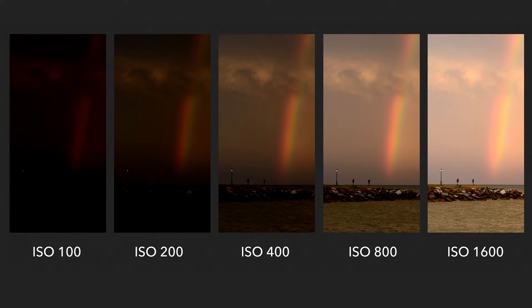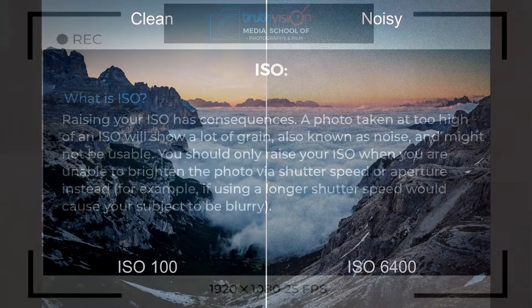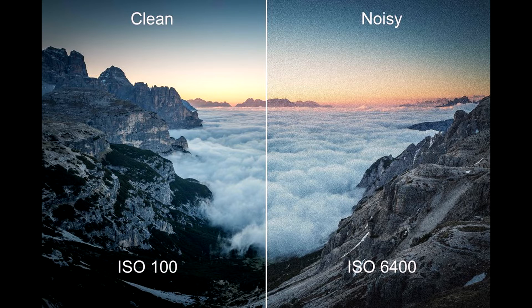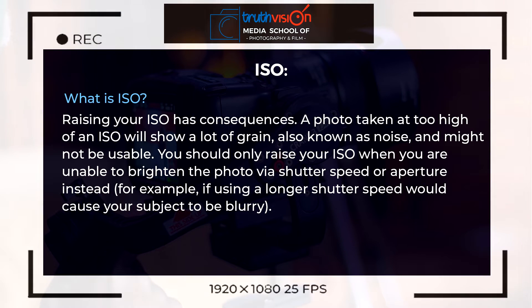You have to know that raising your ISO too high has its own consequences. It will show a lot of grain and noise — your picture will look overexposed and grainy, and I will show an example here. Sometimes when a picture has a lot of grain or noise it might become unusable, so you should only raise your ISO when you are unable to brighten the photo via the other pillars: shutter speed or aperture.